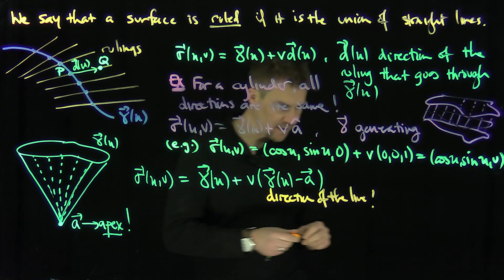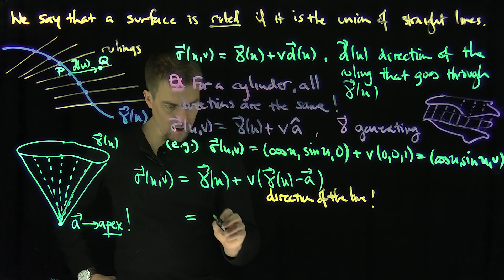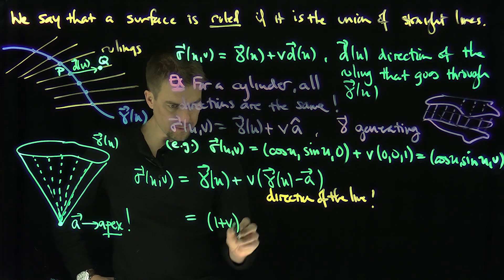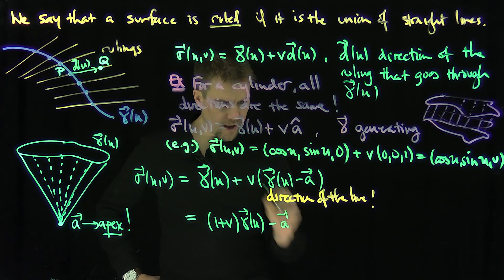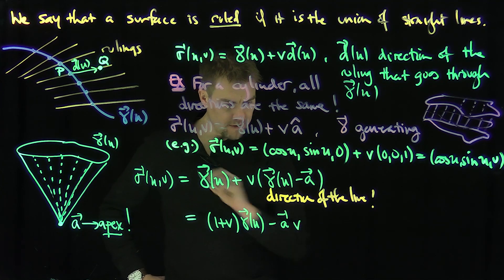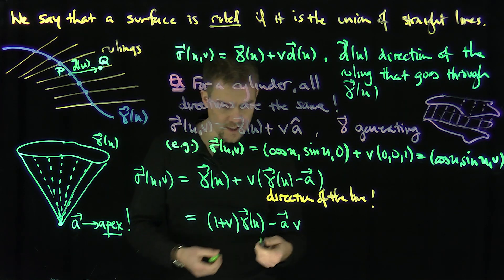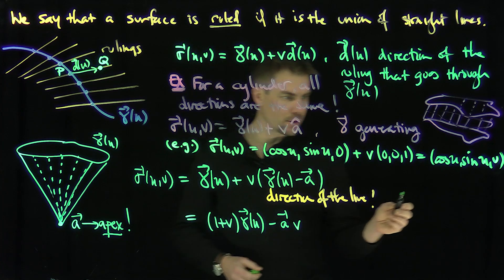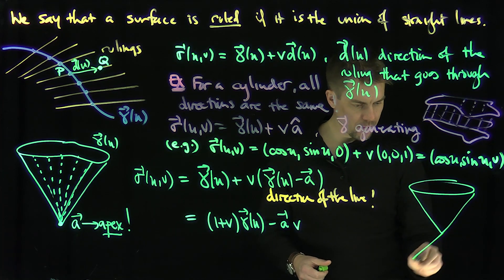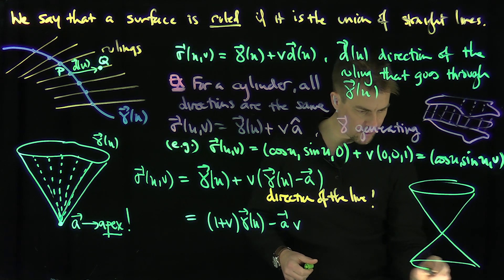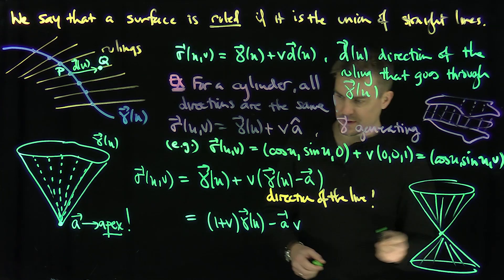If we simplify this, what do we get? This is equal to 1 plus v, gamma of u, and then minus a, and then v, like this. And so we can also reparameterize this in any number of ways we want. But what's the example with the standard cone? The standard cone looks like this, where they have a circle. That's our standard cone.